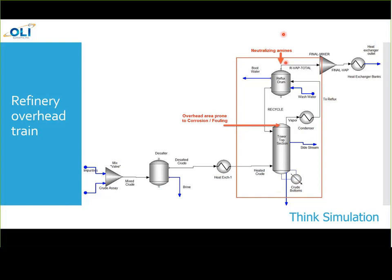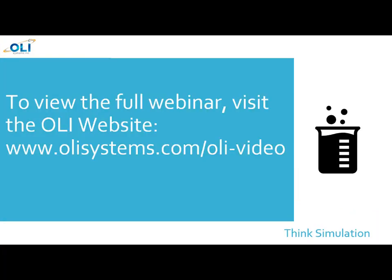The neutralizing amines here are added to combat the corrosion in the refinery overhead systems. However, the corrosion that happens due to neutralizing amines and subsequent corrosion-related failures are frequently reported in refineries. Another major source of corrosion comes from the desolter output as well, and we'll talk more about this as we go forward in this presentation.